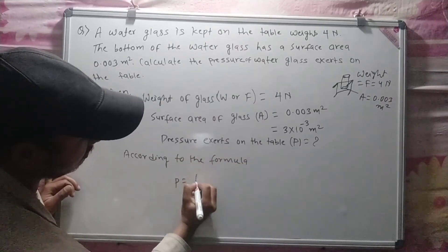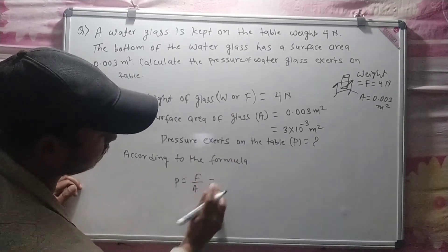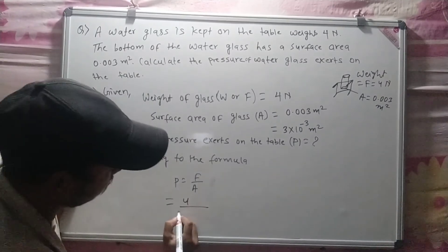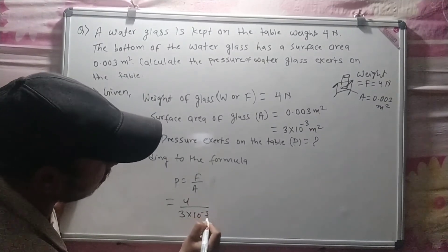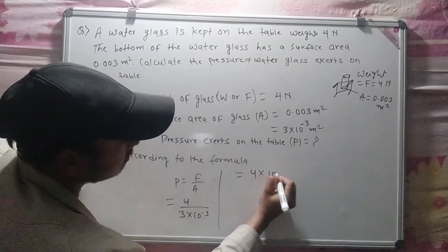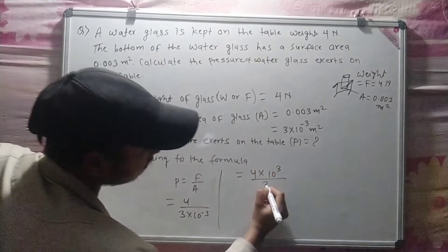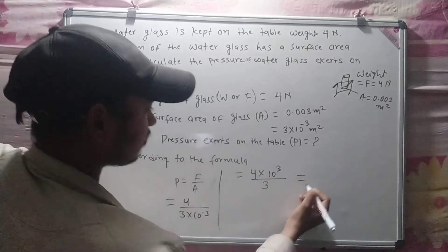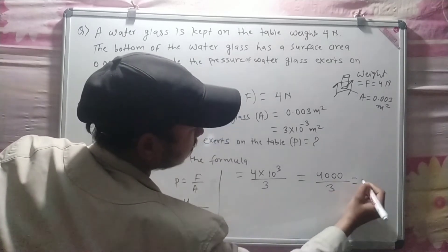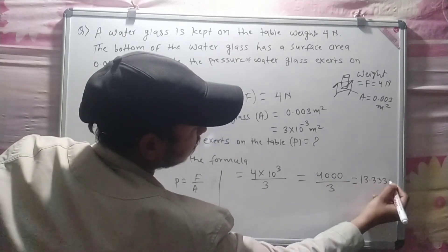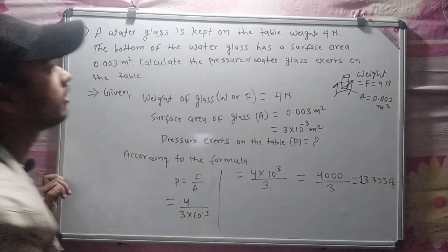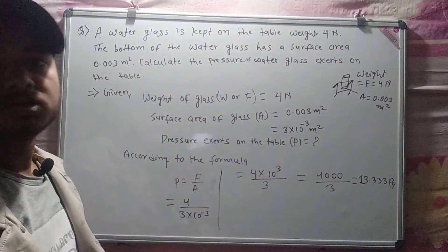So, P = F divided by A = 4 divided by 3 × 10 to the power minus 3 = 4 × 10 to the power 3 divided by 3 = approximately 1333.33 Pascal. So the pressure is approximately 1333.33 Pascal.